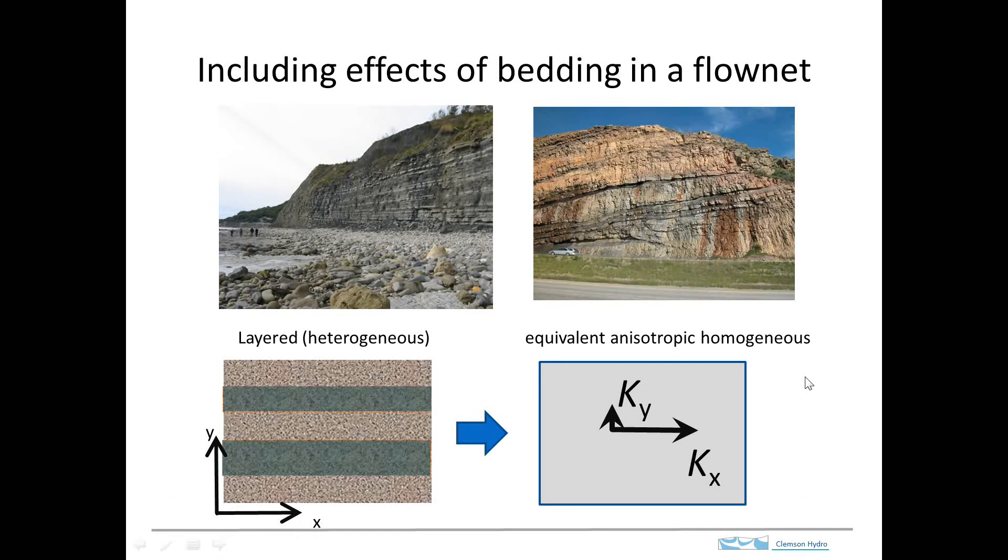We can expand the flow net analysis to include anisotropic conditions using a simple graphical procedure. Anisotropic conditions occur quite often in aquifers that are layered or bedded.